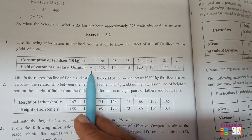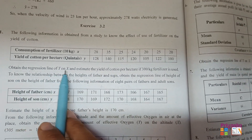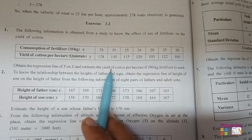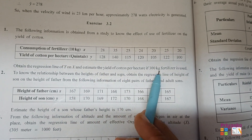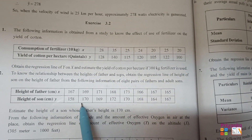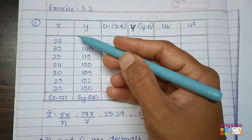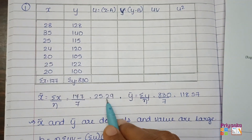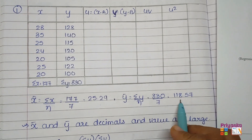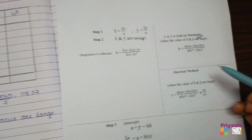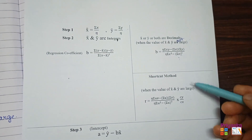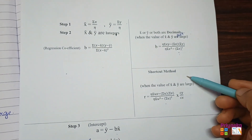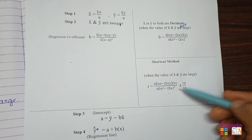Information of x and y is given. Obtain the regression line y on x and estimate the yield of cotton per hectare if 300 kg fertilizer is used. When the answer comes in decimal and values are large, we are going to use the shortcut method — that is the UV method.